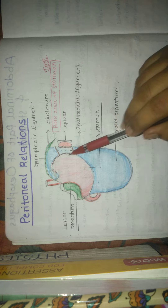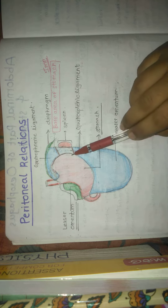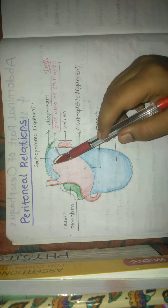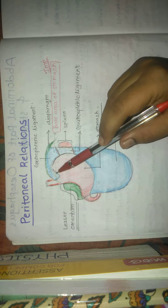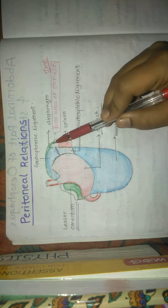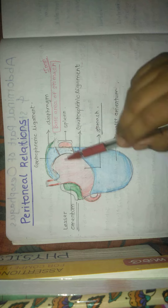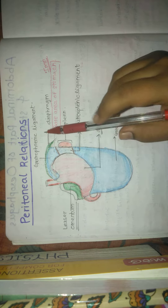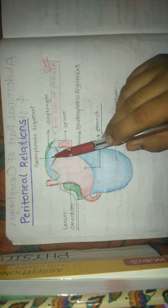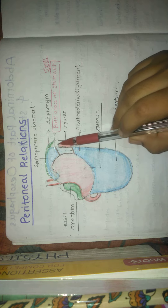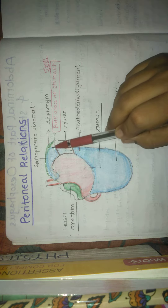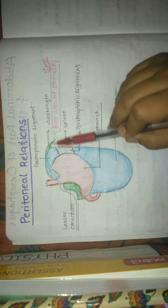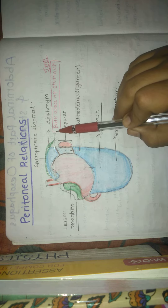At the fundus, the layers form the gastrosplenic ligament. At the cardiac end, the posterior surface is in direct contact with the diaphragm and forms the gastrophrenic ligament. Most importantly, this area is called the bare area of the stomach.